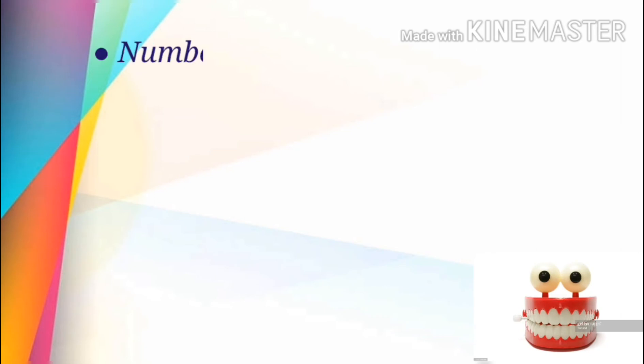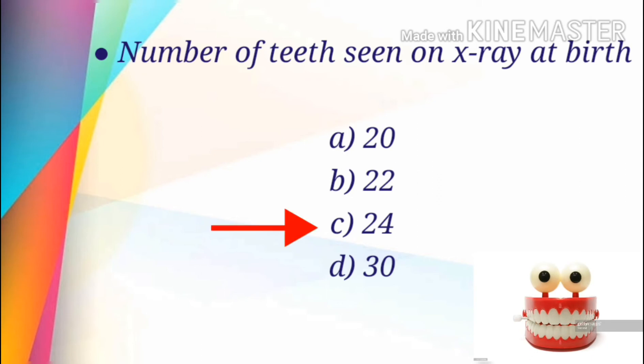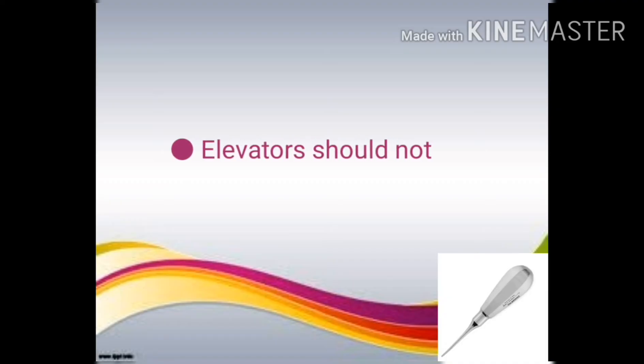The first question: the number of teeth seen on X-ray at birth. The options are 20, 22, 24, or 30. The answer is C — 24.